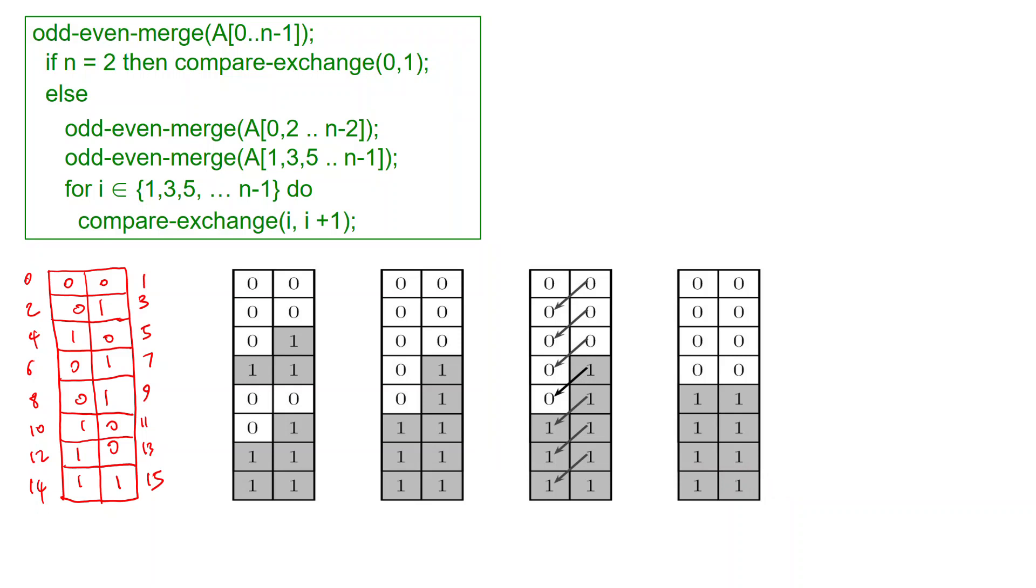The first thing that we do in odd even merge sort is to sort each half of the input. Once you sort each half you get this second matrix. And now the fun begins with the odd even merge. The way in which odd even merge works is that you're going to merge the even column and separately you're going to merge the odd column. So you call these two recursive calls to odd even merge and you produce this matrix here.